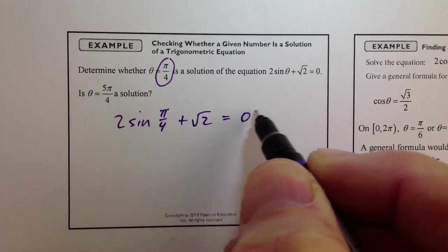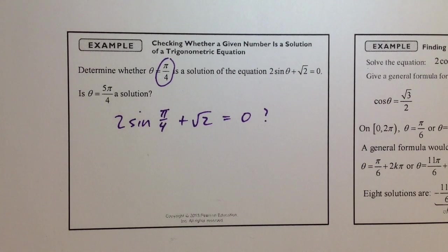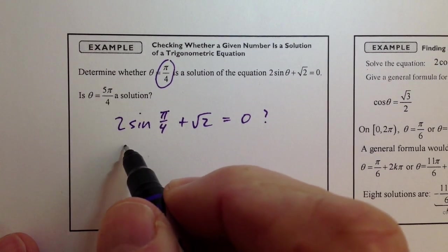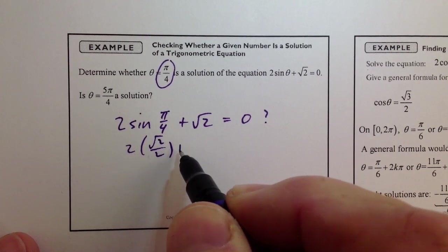does this solve the equation? And you have to know your unit circle values really well, sin of pi over 4, radical 2 over 2. So you just replace that, radical 2 over 2,